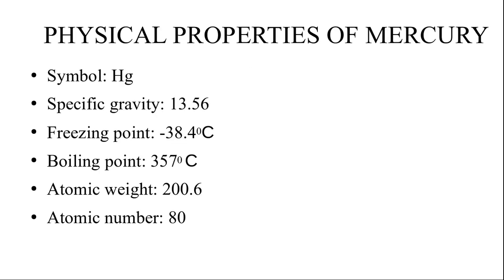Now let's consider the physical properties of mercury. The symbol is HG. The specific gravity is 13.56, and its freezing point is minus 38.4 degrees Celsius. It will boil at a temperature of 357 degrees Celsius. It has atomic weight 200.6 and atomic number 80.